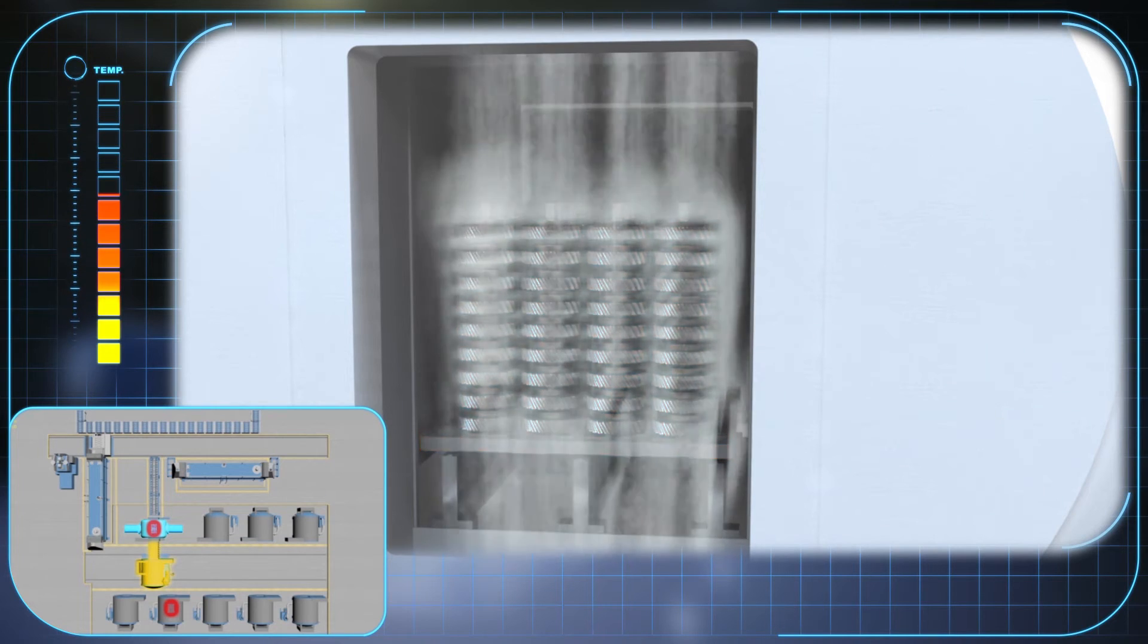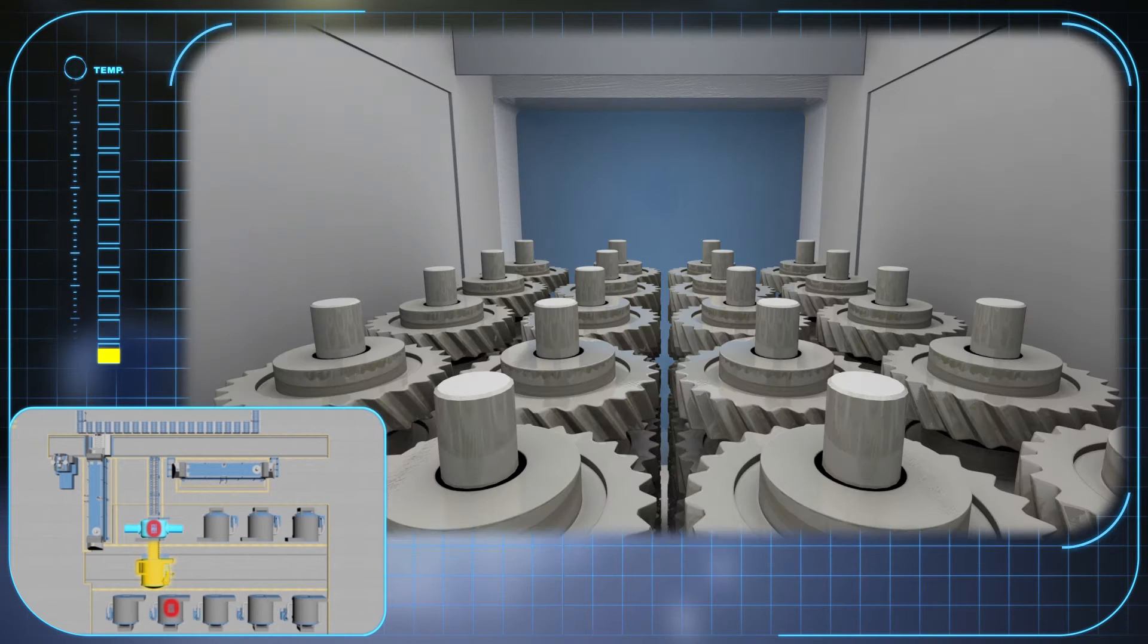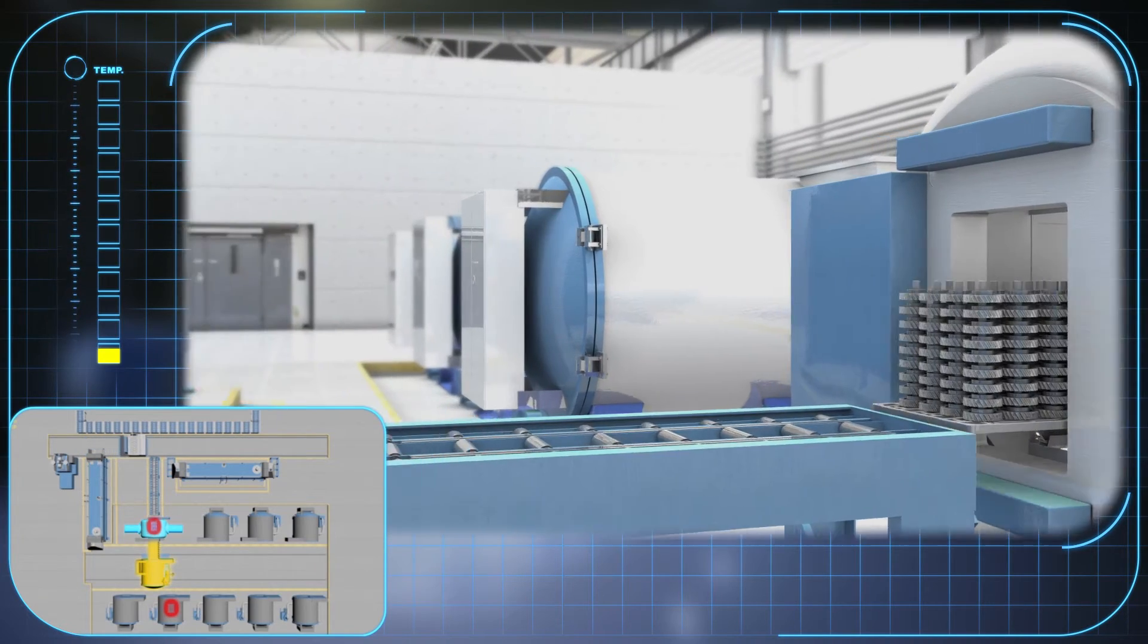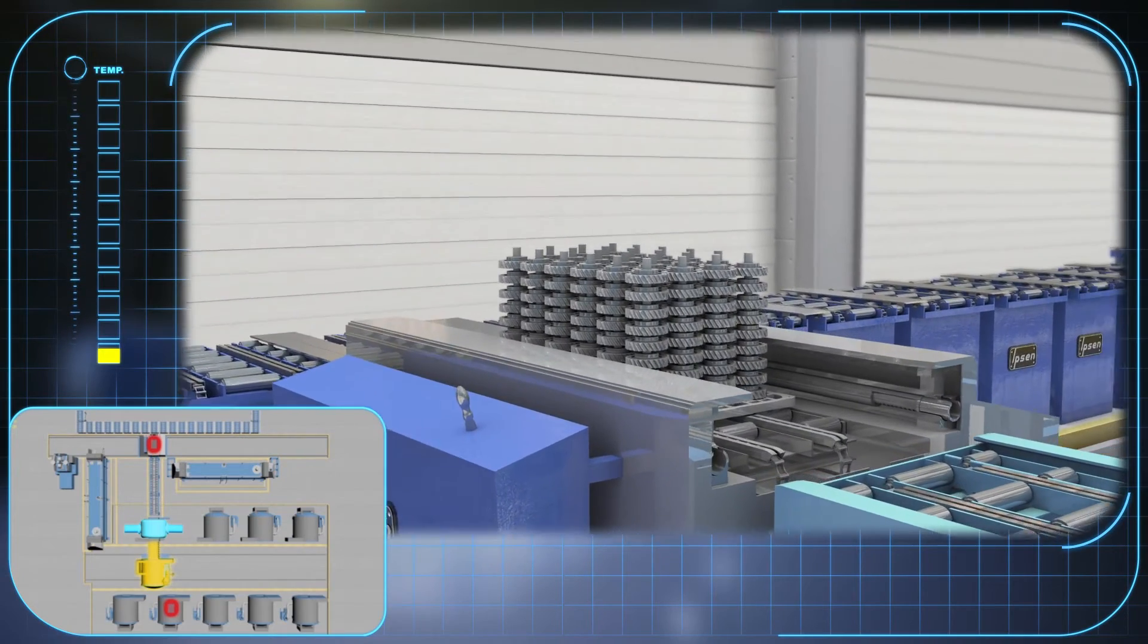The required hardening process is then carried out in the high pressure gas quenching module. The flow optimized design of the gas guide device ensures a uniform flow over the entire load surface. The compact housing design provides a low level of cooling gas consumption.